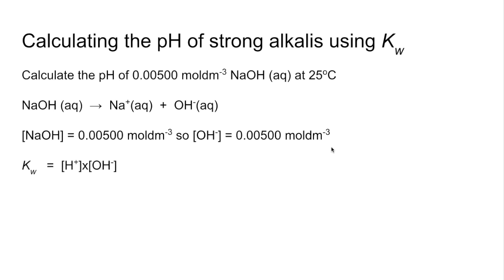So if we bring in the KW expression now and rearrange it for the hydrogen ion concentration, we know both KW and the OH minus concentration. So we put them in. So H plus concentration equals that. So the pH is the minus log of that, which is 11.70.